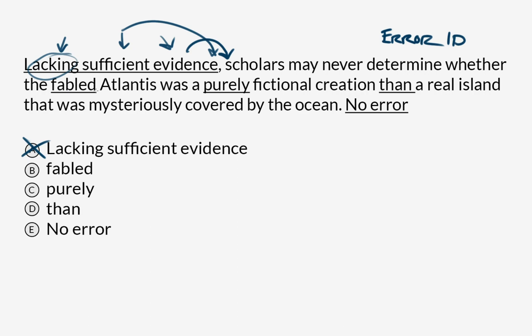Option B: 'the fabled Atlantis' — as in, it's famous, stories are told about it. 'Fabled' is an adjective — it's an adjective made out of a verb — being used to describe Atlantis, a proper noun. This is correct.